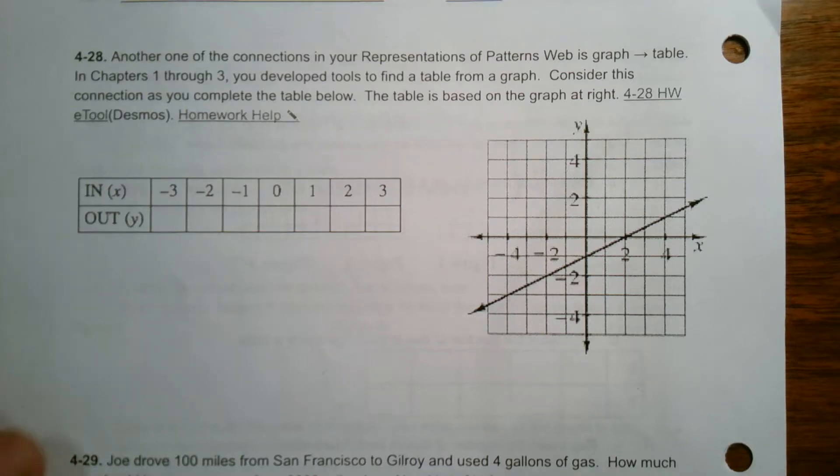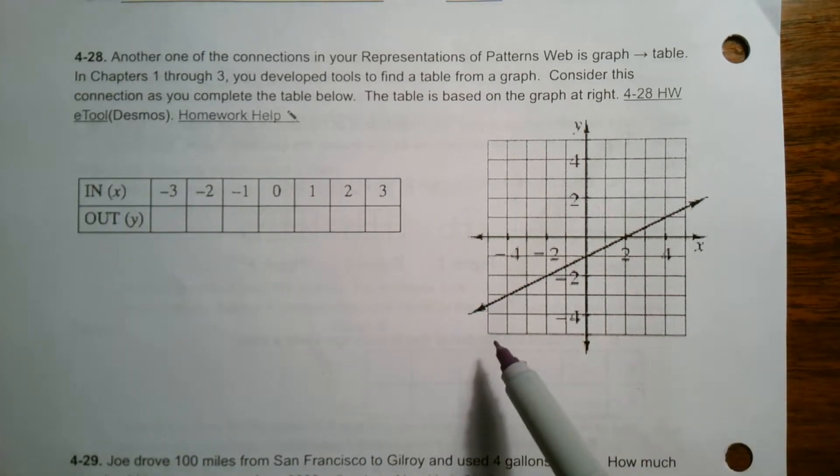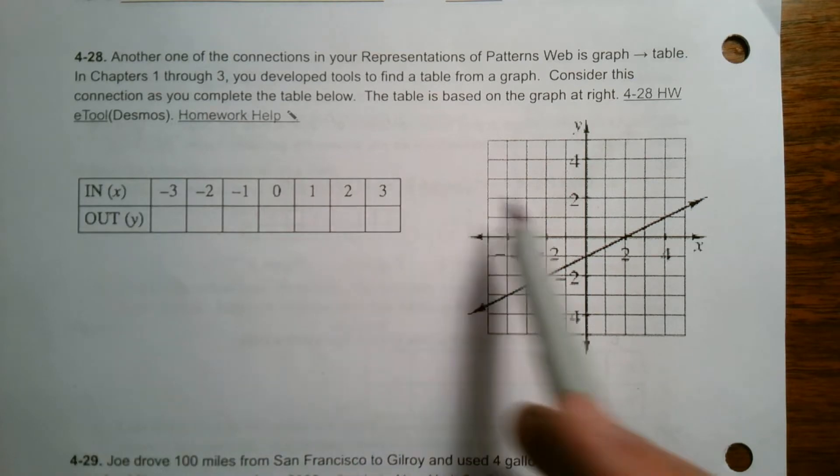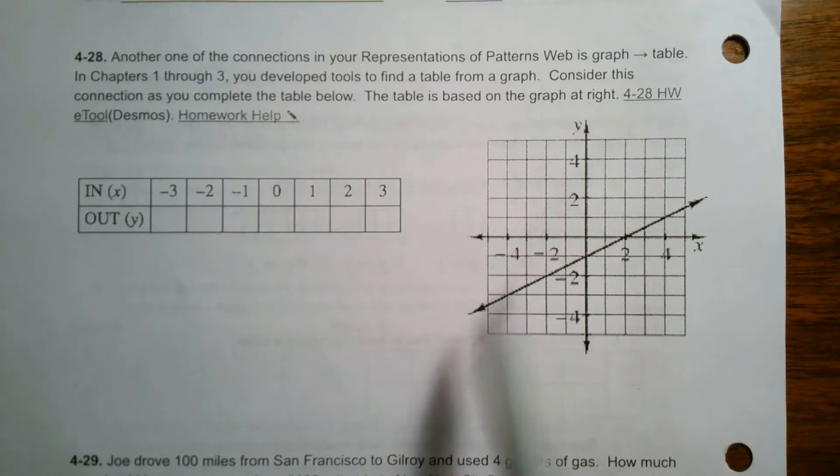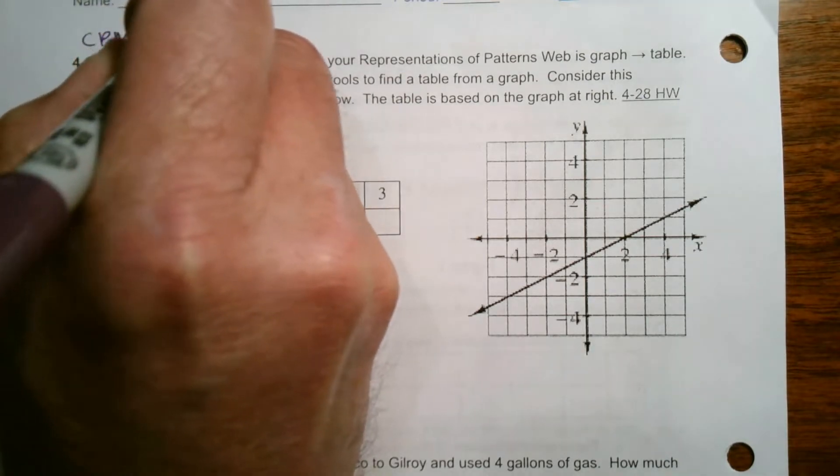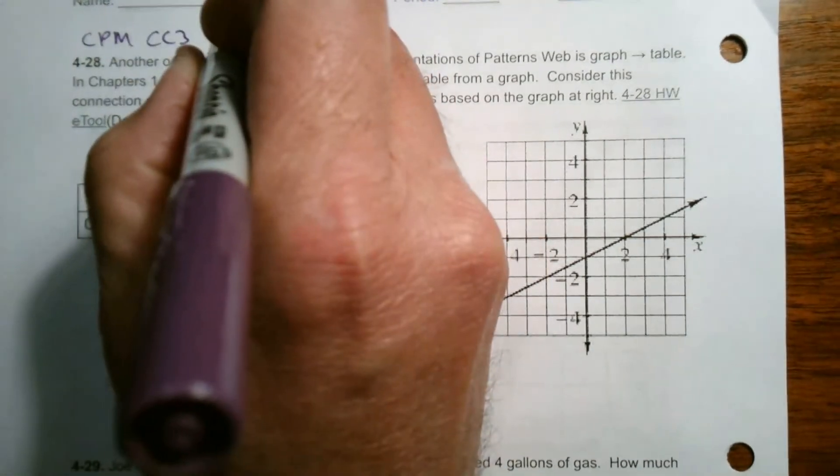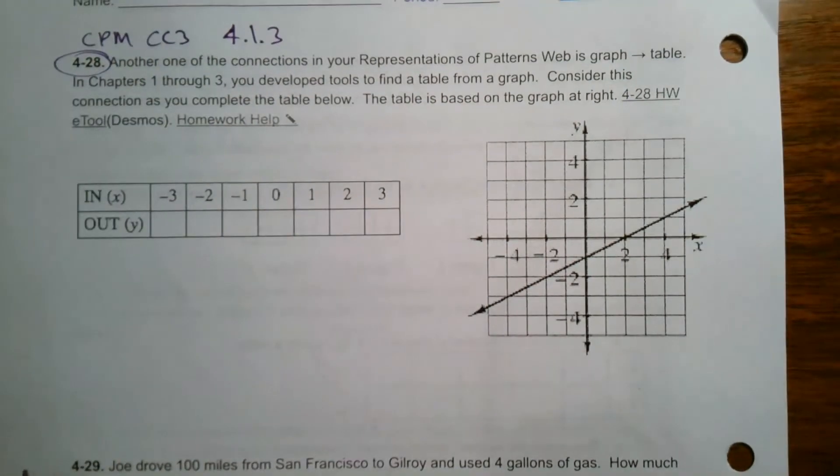Hi folks, Mr. Dell here. We are looking at a given actual graph of a line. It wants me to complete the table and consider the connection of the table and the graph. This is from CPM course three, section 4.1.3, specifically number 4-28.